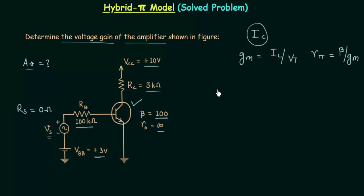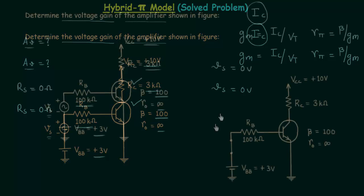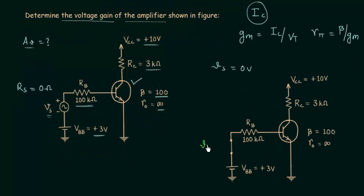To perform the DC analysis we need to do two things. First, short circuit all the AC voltage sources — we short circuit Vs, making Vs equal to 0V. Second, open circuit all the capacitors, but there are no capacitors in this circuit so step two is not needed. This gives us the DC equivalent circuit.